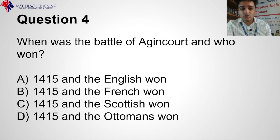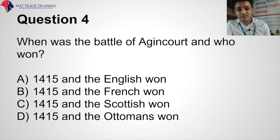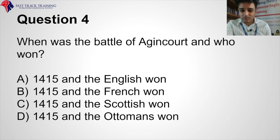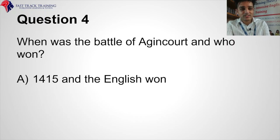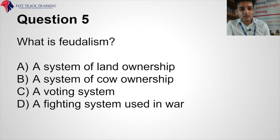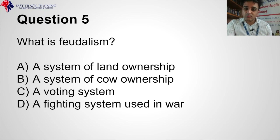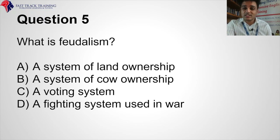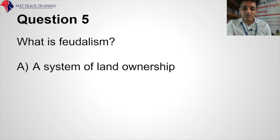Question four: When was the Battle of Agincourt and who won? 1415 and the English won, 1415 and the French won, 1415 and the Scottish won, or 1415 and the Ottomans won? The correct answer is 1415 and the English won. Question five: What is feudalism? A system of land ownership, a system of cow ownership, a voting system, or a fighting system used in war? The correct answer is a system of land ownership.